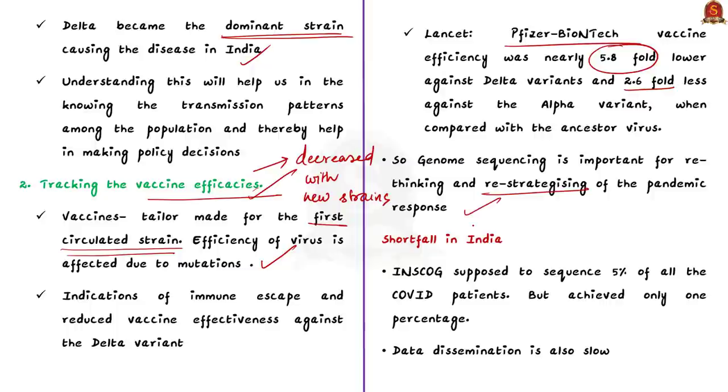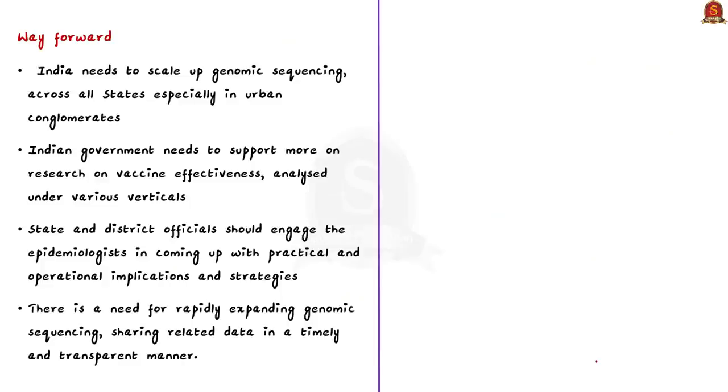Continuous genome sequencing is important for rethinking and re-strategizing the pandemic response. When we talk about genome sequencing in India, we have to talk about INSACOG. INSACOG is a consortium of 10 labs across the country that monitors the viral spread and pattern. Though India has established INSACOG, we are still yet to see the importance of genome sequencing. We were supposed to sequence 5% of all COVID-19 patients. But so far, we could only achieve 1%. The data dissemination is also slow in India. So, India is facing major hurdles when it comes to genome sequencing.